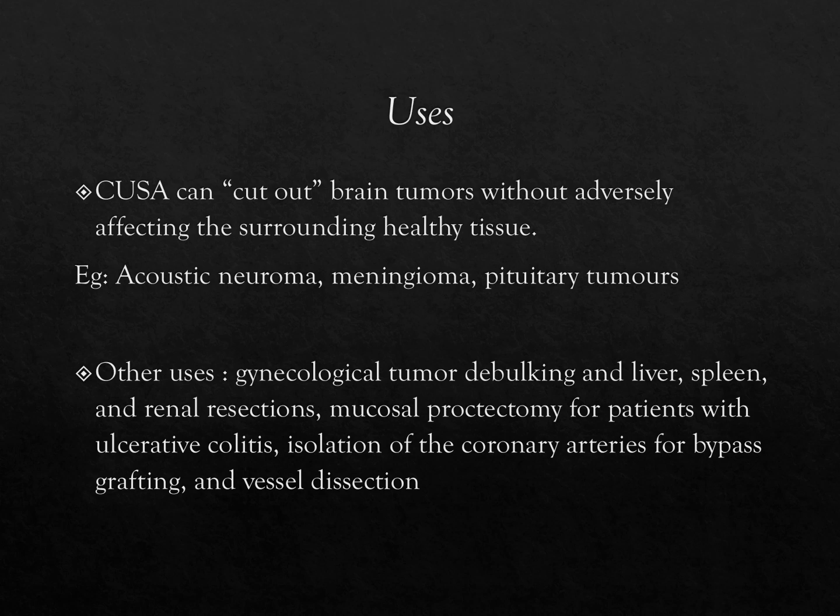CUSA can cut out brain tumors without adversely affecting the surrounding healthy tissue, and can be used for acoustic neuroma, meningioma, and pituitary tumors. Other uses include gynecological tumor debulking, liver, spleen, and renal resections, mucosal protectectomy for patients with ulcerative colitis, isolation of the coronary arteries for bypass grafting, and vessel dissection.